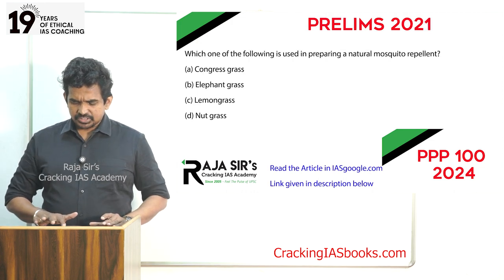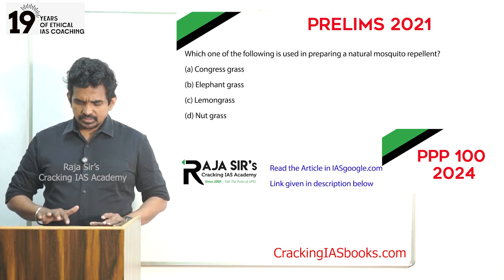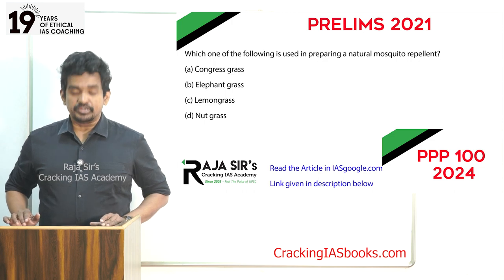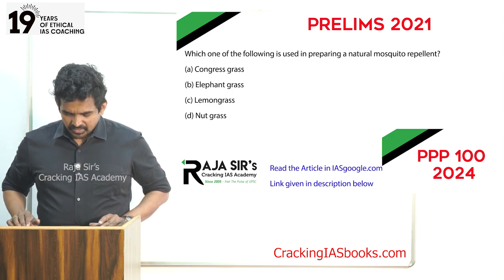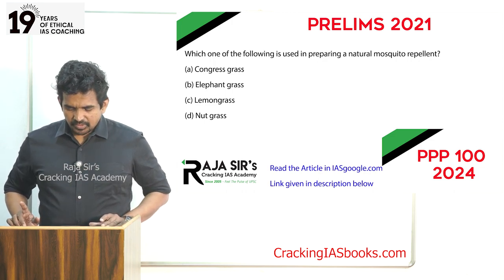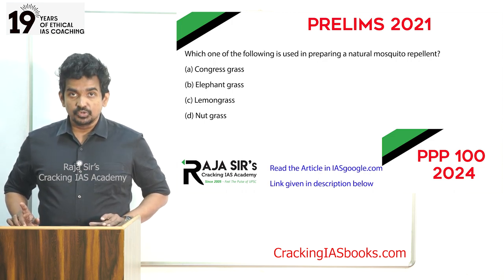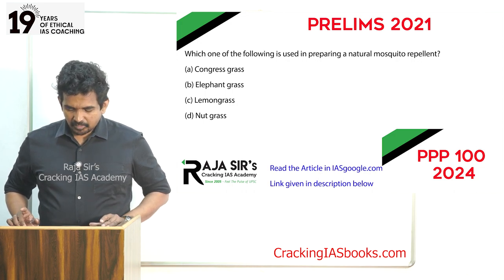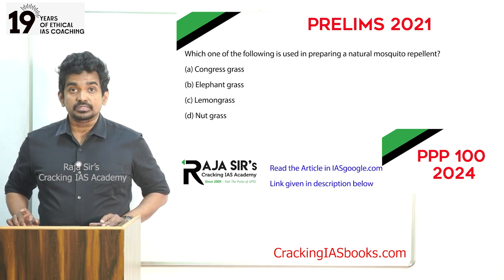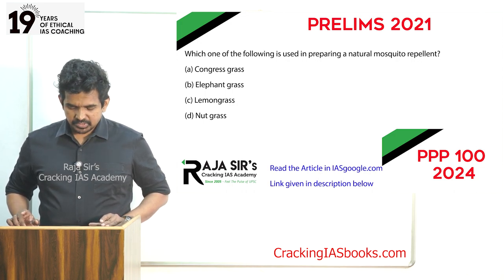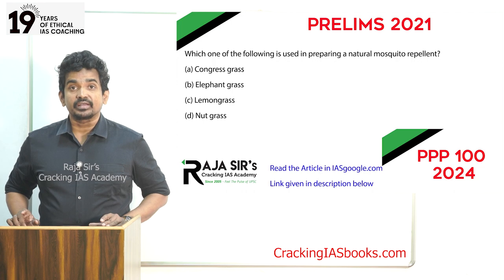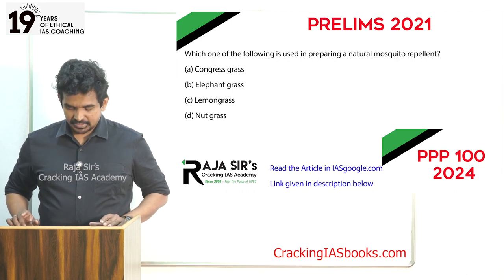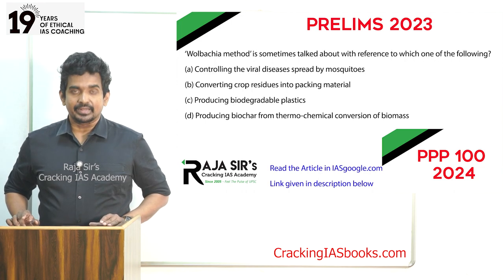The next question is from 2021: 'Which one of the following is used in preparing a natural mosquito repellent?' Option A: Congress grass. Option B: Elephant grass. Option C: Lemongrass. Option D: Nut grass.